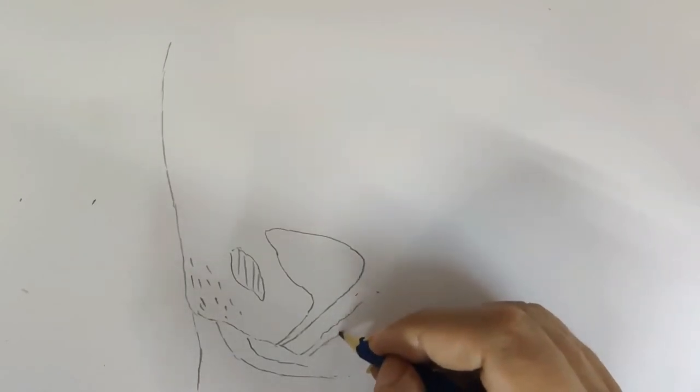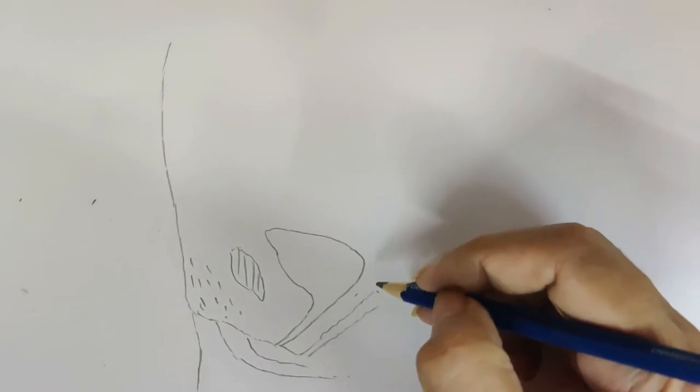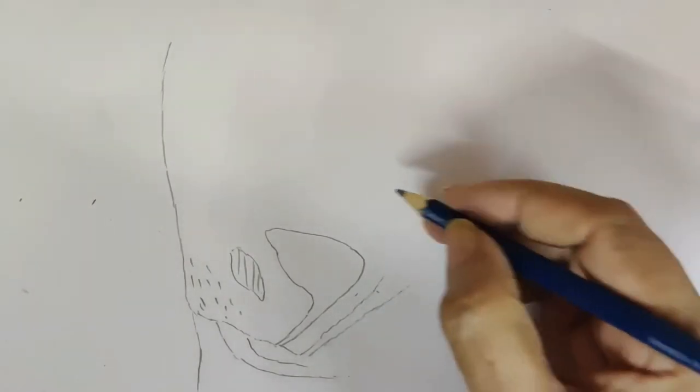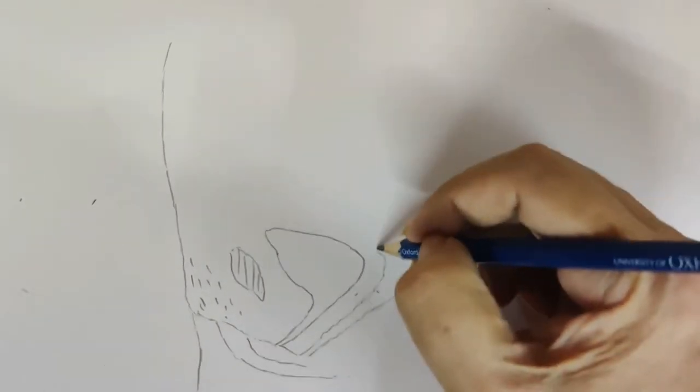Just behind that is a long muscular tube called the vagina. This vagina will lead to the muscular bag-like structure.